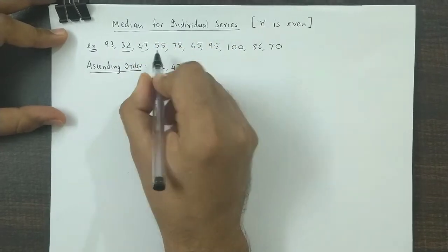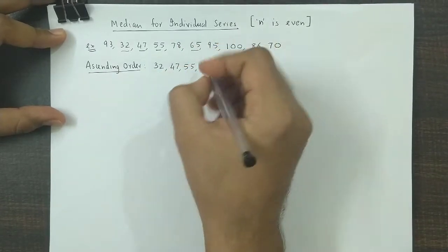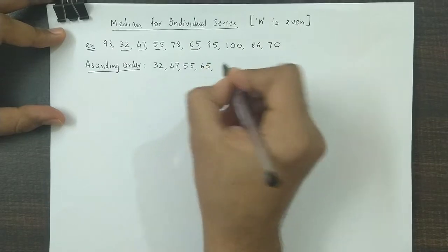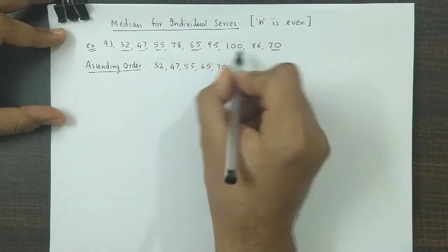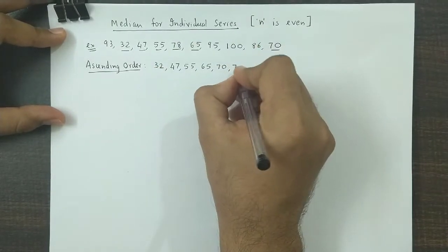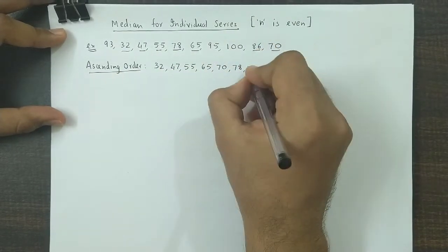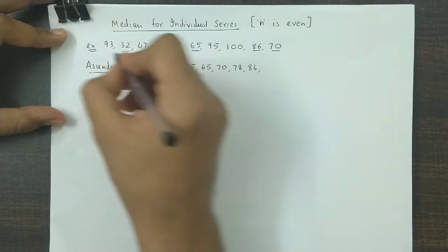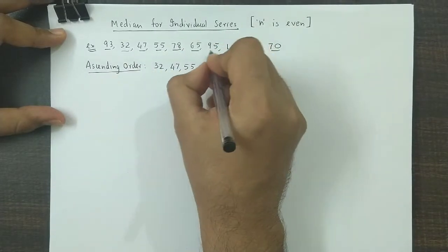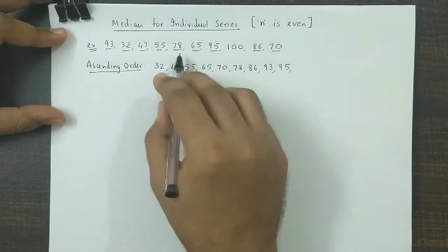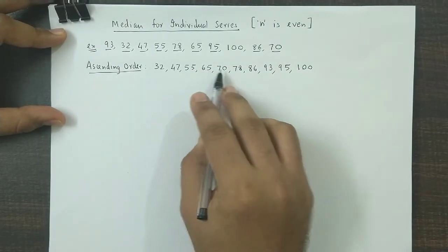Next would be 55, next would be 65, next comes 70, next would be 78, next would be 86, next value would be 93, and next is 95, and the last one here is 100.